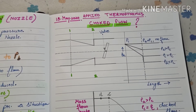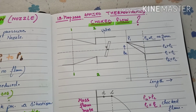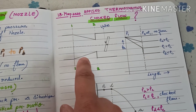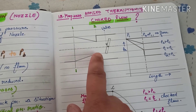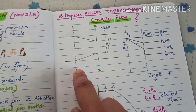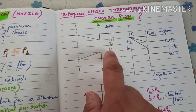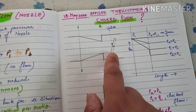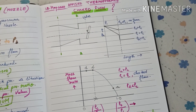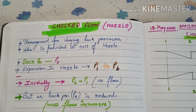In this video we will be discussing what is choked flow in the case of a nozzle. We are taking a converging nozzle with two areas — entry and exit. At the exit point we have provided a valve at the nozzle, and we will be discussing these figures in this video.